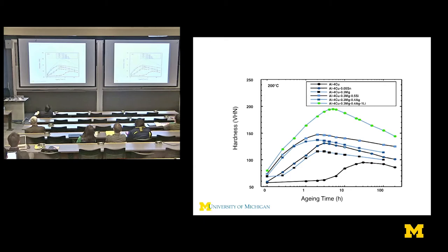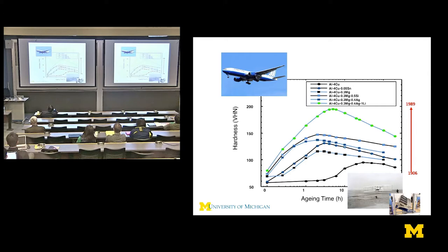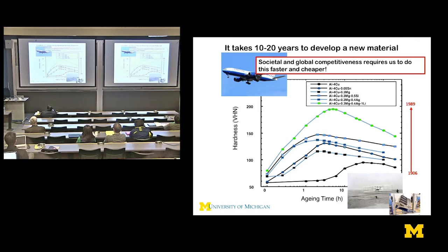This second curve has the same amount of copper, plus 0.3 magnesium, 0.4 silver, and 1 lithium. What's interesting is that the first curve was the engine block in the Wright Brothers' Flyer in 1906, and this second curve is the wing structure of the 777 in 1989. So it took us 80 years to add 0.3 magnesium, 0.4 silver, and 1 lithium. We have got to do better than that.